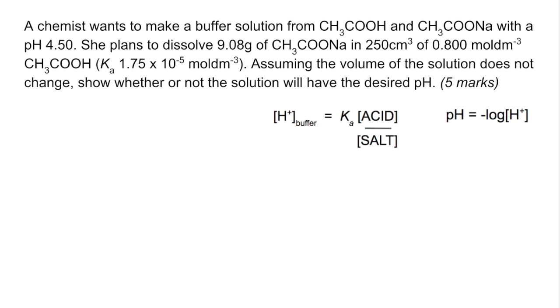So let's have a quick look through the information in the question, see what we've already got. Well, we've got the Ka value and we've actually got the acid concentration, 0.8 moles per dm³. What we haven't got is the salt concentration, but we can work it out.